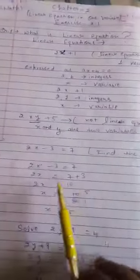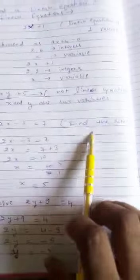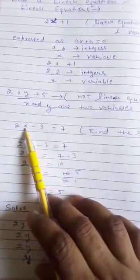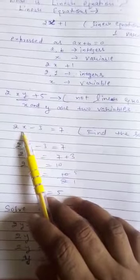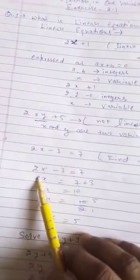Now question can be given this is the question 2x minus 3 is equal to 7, can be given find the solution. Solution means you have to find out the value of x which value we need to take out that we have to keep left hand side. So here x value we will keep left hand side.